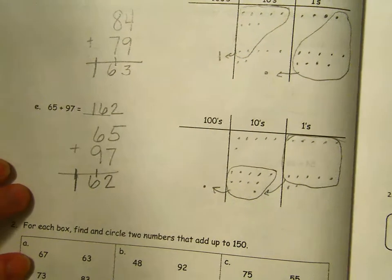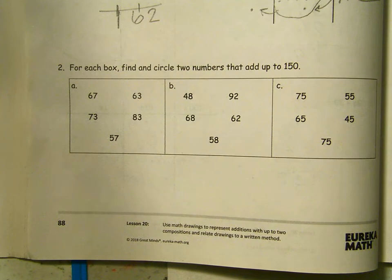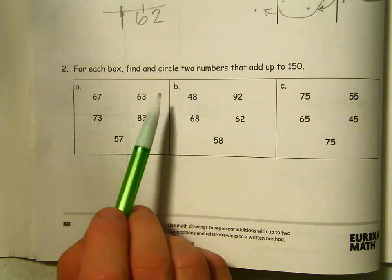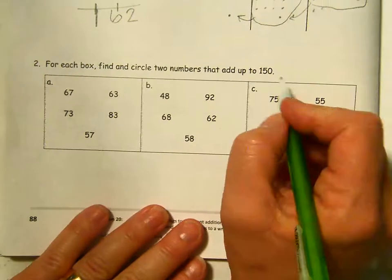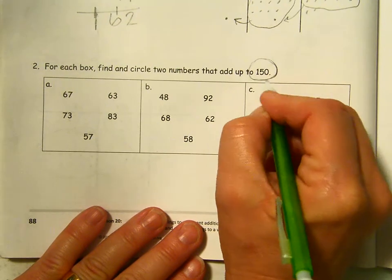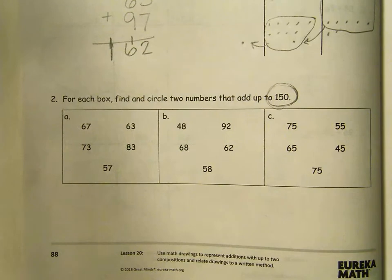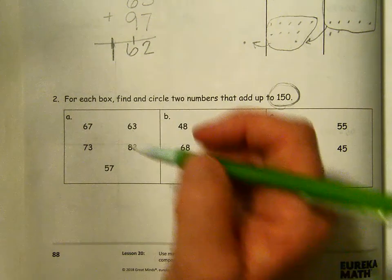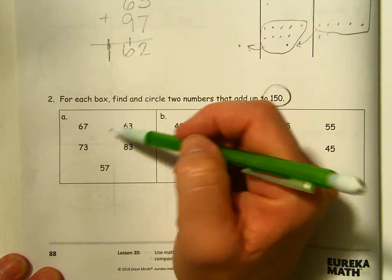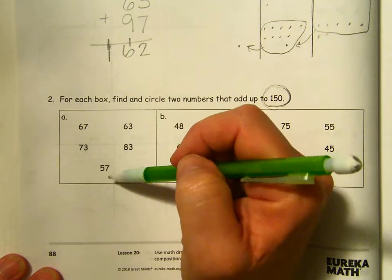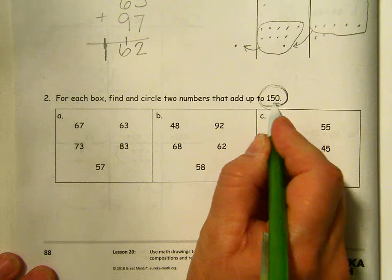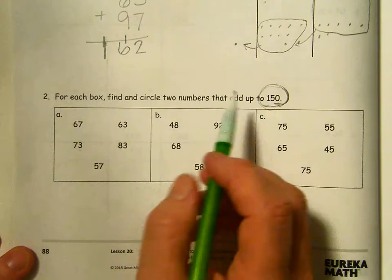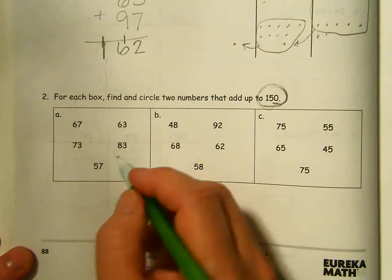Okay. So now these down here are a little tricky. What we have to do is in each one of these boxes, A, B, and C, we're going to circle two numbers that add up to 150. So in this first box, we have numbers that end with three and numbers that end with seven. If we're going to end up with 15 tens, clearly we're not going to have any ones. So we need to have one of these seven numbers with one of the three numbers.